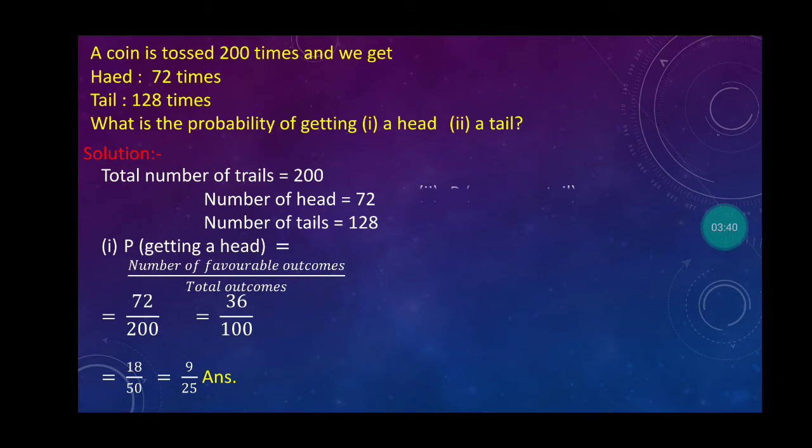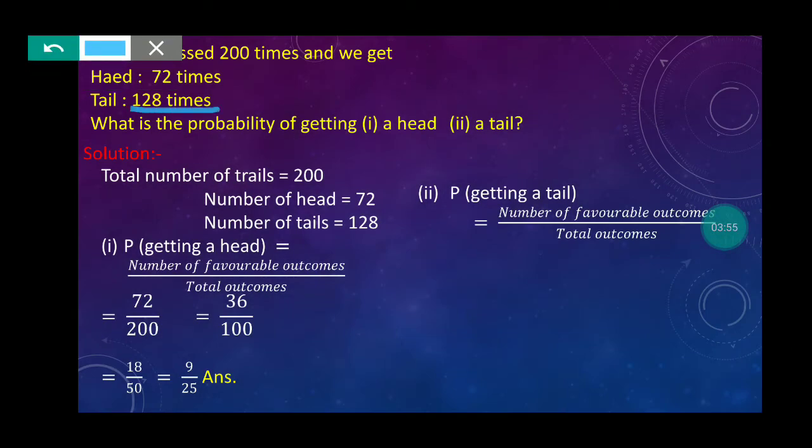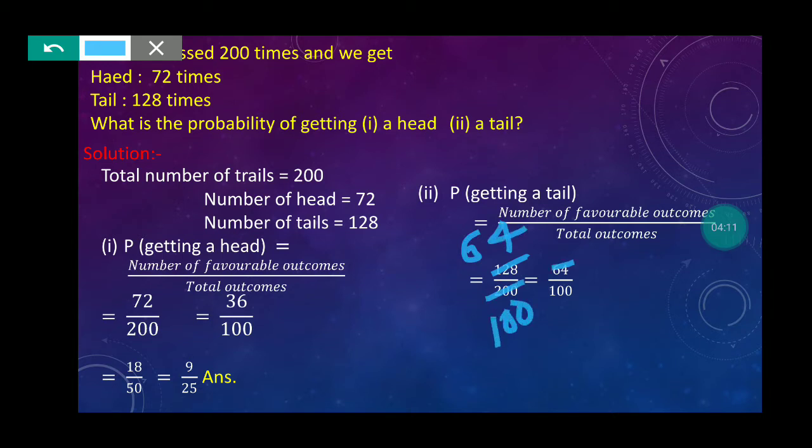Now, second point, tail. P(getting a tail), same formula pattern: number of favorable outcomes upon total outcomes. Tail came 128 times upon 200. Simplifying by dividing by 2: 64 upon 100. Again dividing by 2: 32 upon 50. Again dividing digits: 16 upon 25. So answer is 16 upon 25.